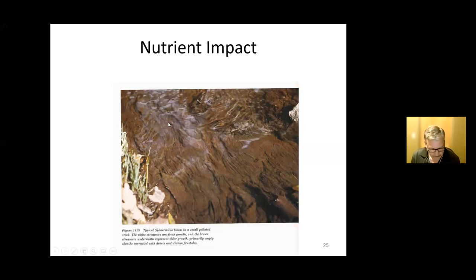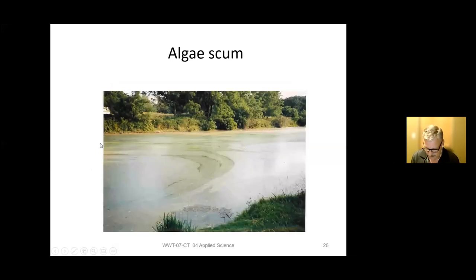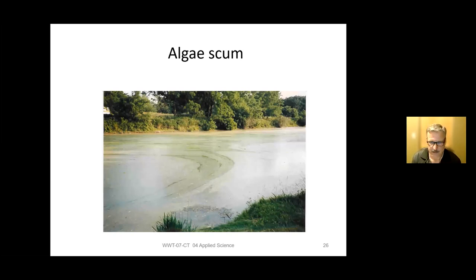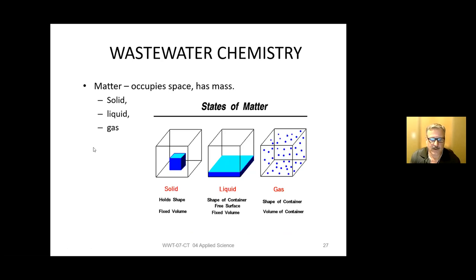The reason a wastewater treatment facility exists is to protect public health and the environment. Without a treatment plant, you get excess nutrients going to the environment, which can cause eutrophication and dramatically impact a water source. Eutrophication — a high impact of nutrients — results in algae blooms. Write that down: eutrophication will almost certainly be on the exam.